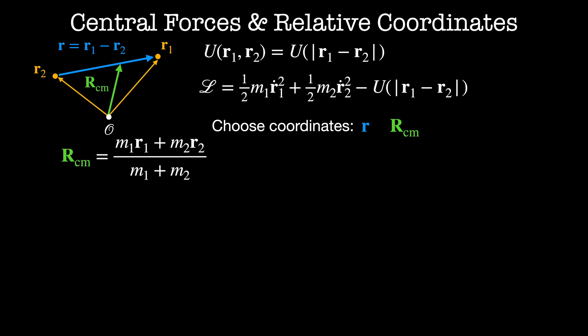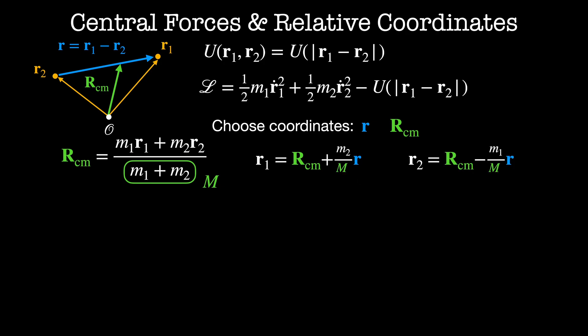The center of mass is given by the weighted average of the positions of the particles: m1 times r1 plus m2 times r2, divided by the total mass, which we're going to call big M. We'd like to rewrite the Lagrangian in terms of these new coordinates. The potential energy is already a function of these coordinates as it depends only on the magnitude of the relative position r. To find the kinetic energy, we can rewrite our positions r1 and r2 in terms of our new coordinates r and rcm. r1 is equal to rcm plus m2 over the total mass times the relative position r.